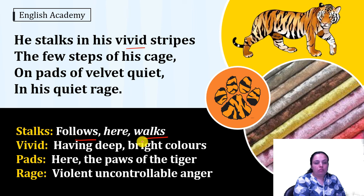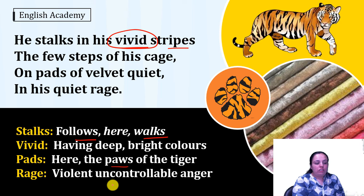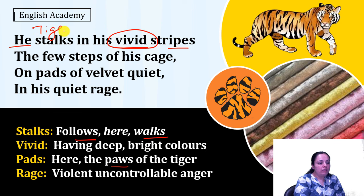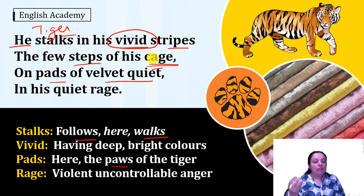Stalks means follows, but here it means walks because the tiger is alone and not following anyone. Vivid means having deep bright colors, so vivid stripes refers to the bright yellow and black colors of the tiger's skin. Pads refers to the paws of the tiger, and rage means violent uncontrollable anger. The poet says the tiger walks with his brightly colored skin and can only take a few steps because the cage is quite small. The tiger walks on his velvet paws — the paws are made of fur which is very soft like velvet fabric, so the tiger does not make any sound when it walks.